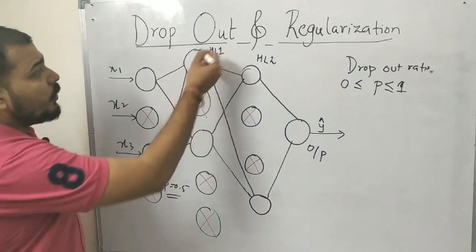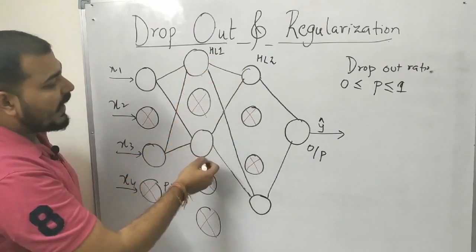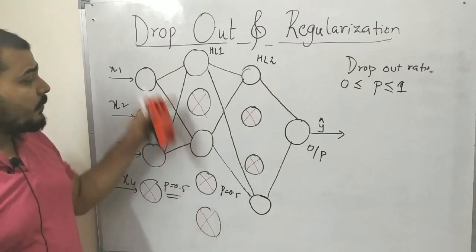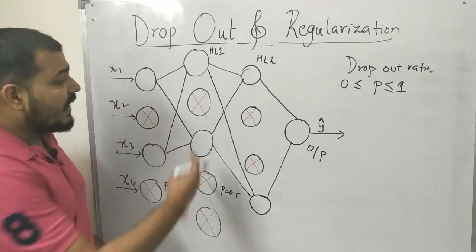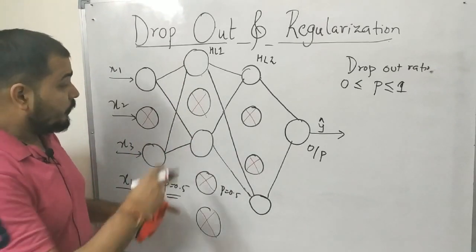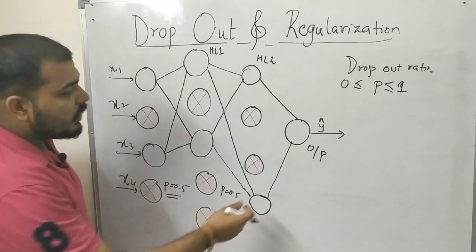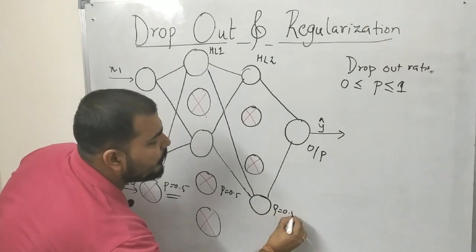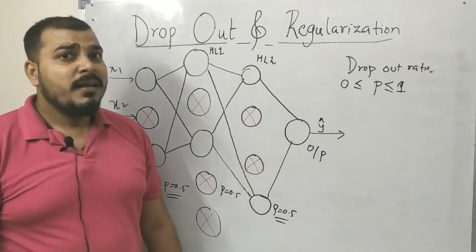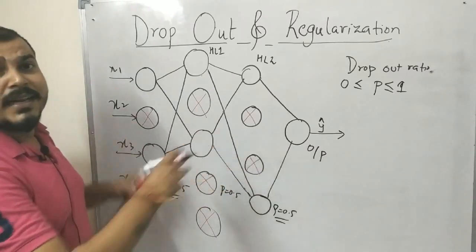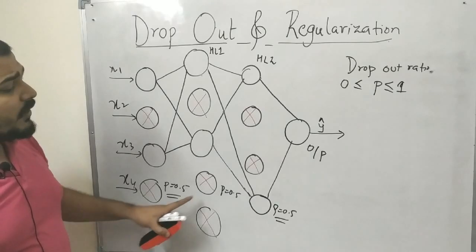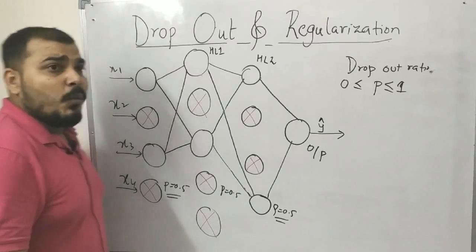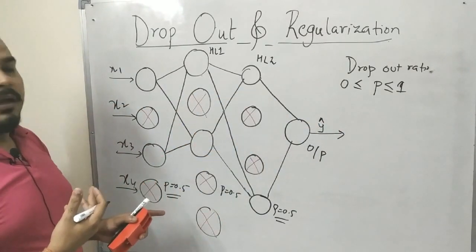Similarly, in hidden layer 1, with five nodes, two are activated and three are deactivated, giving approximately P = 0.5. In hidden layer 2, two are inactivated and two are activated, so again P = 0.5. In this example, I have selected a dropout ratio of P = 0.5 for each and every layer.